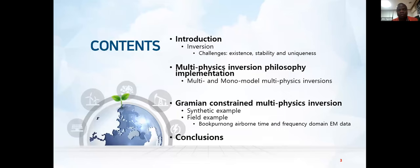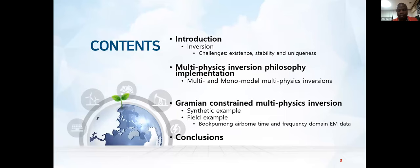The third item is gramian-constrained multi-physics inversion. I'll give a synthetic example and then wrap up with a field example from Buk-Ponong airborne time and frequency domain electromagnetic data from South Australia. And of course, finally, I'll conclude.